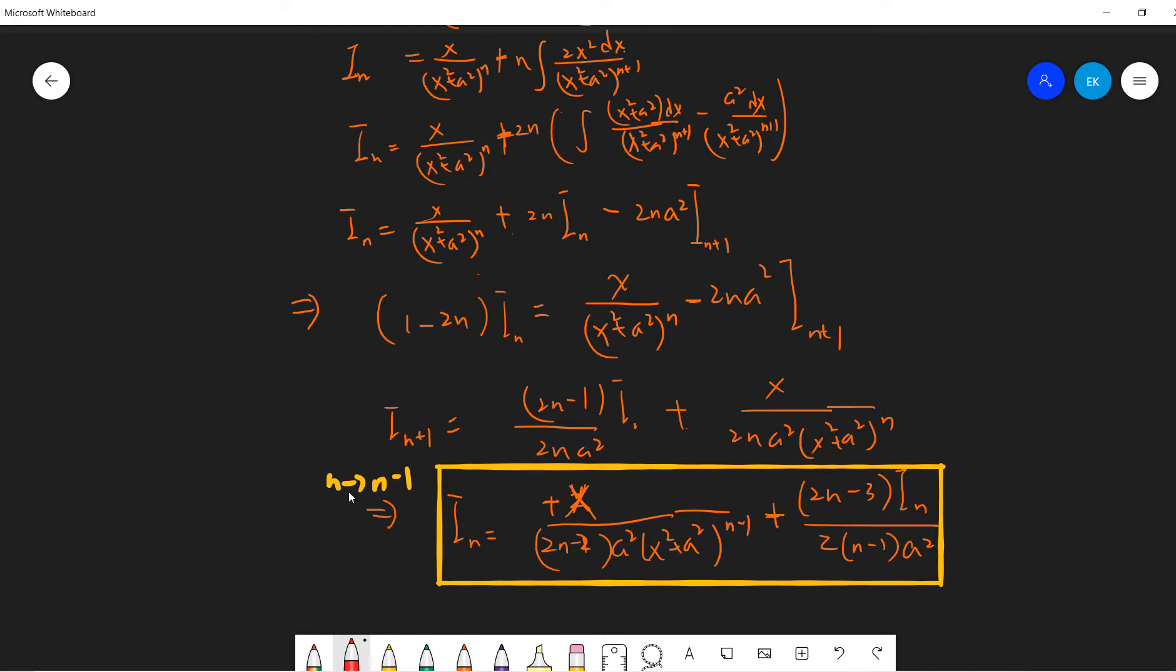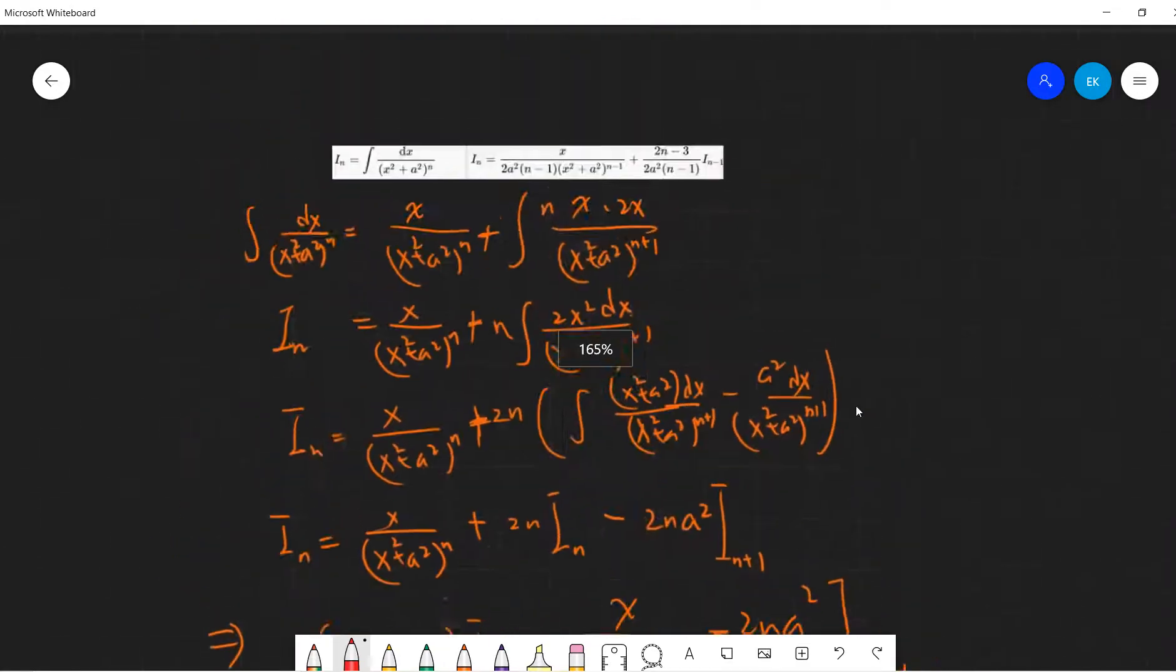And finally, we shift it. We shift n to n minus 1. So this I_n plus 1 becomes I_n. And then this term pulls out here. And then this 2n becomes 2n minus 2 here, right? And the n goes to n minus 1. And then this term goes to this, becomes 2n minus 3. OK. So that's it.